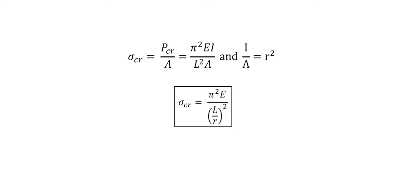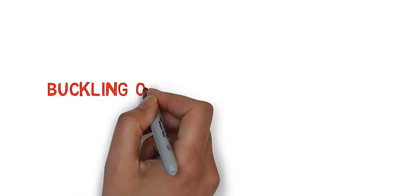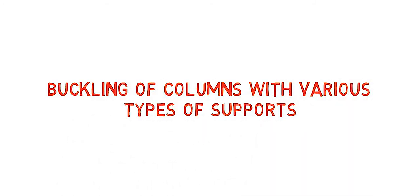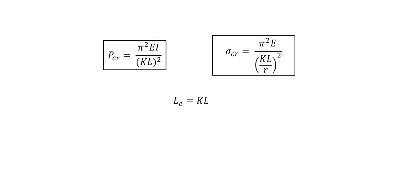Buckling occurs about the axis where this ratio gives the greatest value. Critical stress is the average normal stress in the column just before buckling occurs. This is an elastic stress, and thus critical stress must be less than or equal to yield stress.